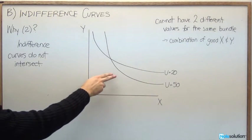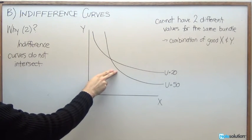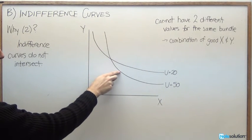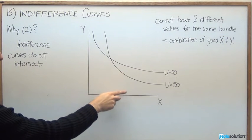So if we were to pick a point here on this indifference curve of utility value of 50, we're going to have this much units of good Y and this many of good X. Let's say we had three of each.